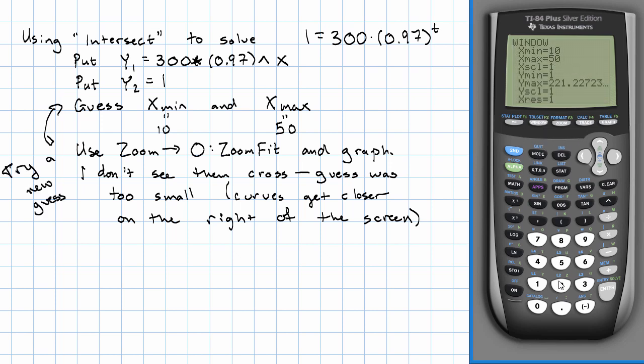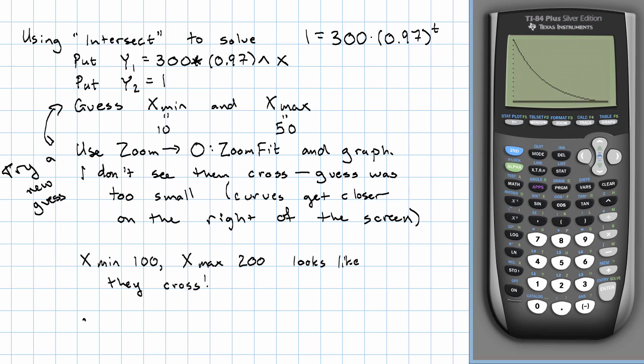10 to 50 was too small. Let's try 50 to 100. 50 to 100 was still too small, but we see they're getting closer. Let's try 100 to 200. That looks like they cross. So I'm going to go to Calc and choose Intersect. I can just hit Enter three times and it tells me the intersection is about where x is 187.3.